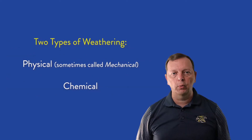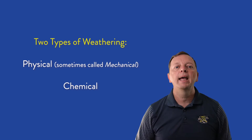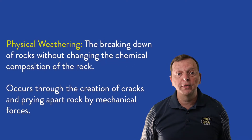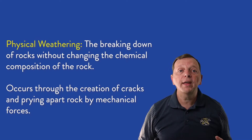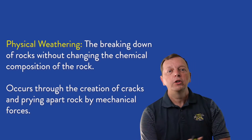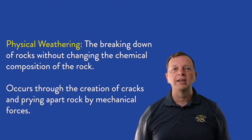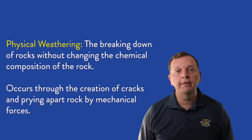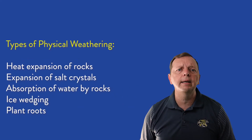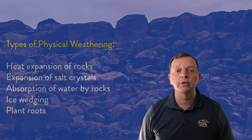There are two major types of weathering: physical weathering and chemical weathering. When you think about physical weathering, think of it as Mother Nature taking a crowbar to break apart rocks — except instead of using a crowbar, Mother Nature uses water, heat, ice, salt, and plants.